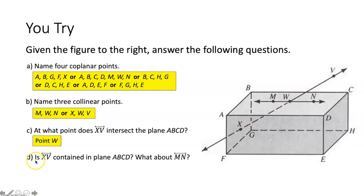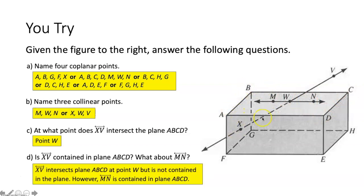Part D: is line XV contained in plane ABCD? No — it just intersects it at point W. All the points in the line would have to be on that plane for it to be contained. Line MN, on the other hand, is completely contained within plane ABCD. So line XV is not contained within plane ABCD, but line MN is contained within plane ABCD.